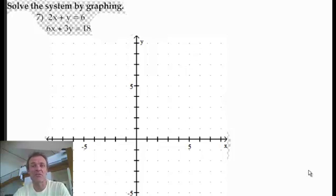Okay, right, solve the system by graphing. Now you're going to do this three ways on the test: graphing, substitution and elimination. So here's the graphing one. Now this is really all about you graphing two lines and just seeing where they cross.